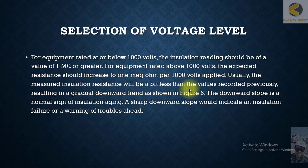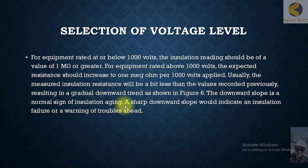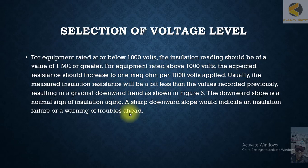The measured insulation resistance will usually be a bit less than the value recorded previously, resulting in a gradual downward trend as shown in figure 6. This downward slope is a normal sign of insulation aging. Since this is maintenance testing done every year, each year the insulation resistance will be slightly less than the previous year — a downward trend or pattern which is perfectly normal.